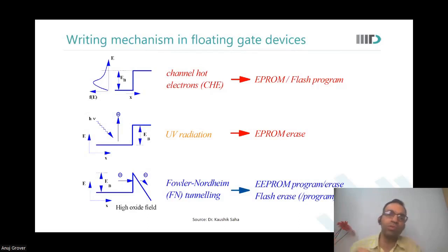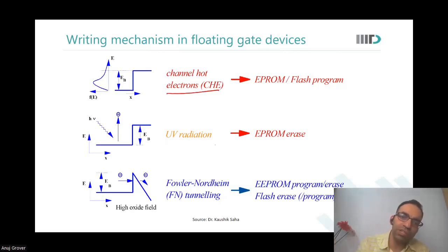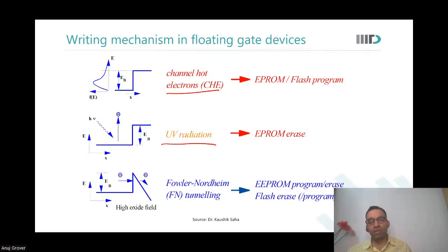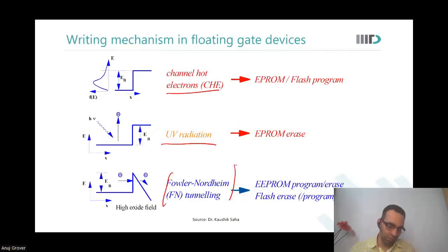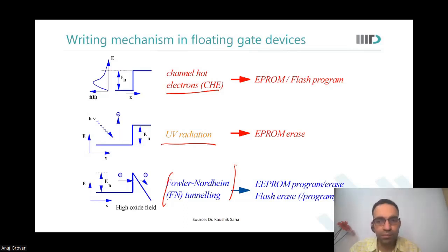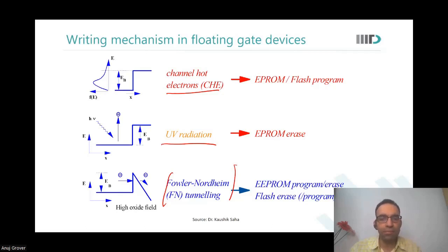To write, we use hot electrons in flash; we use UV radiation in EPROMs. To program or erase, we also use what is called FN tunneling — that's the physics involved. FN tunneling is used for both program and erase operations.